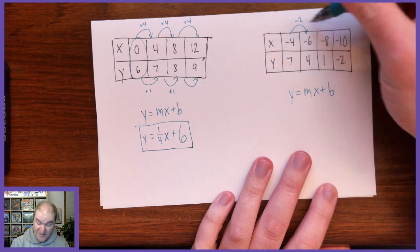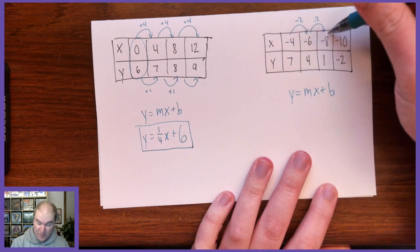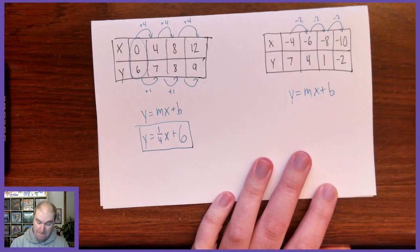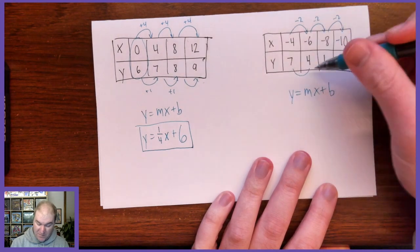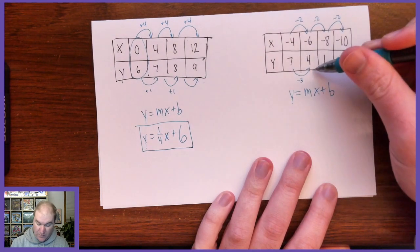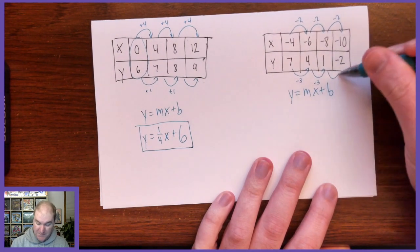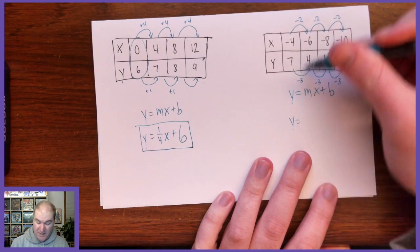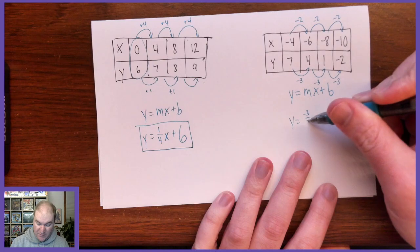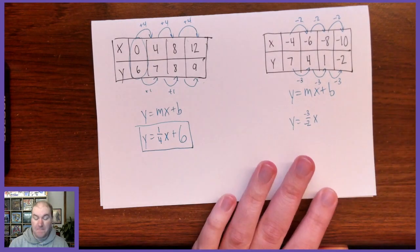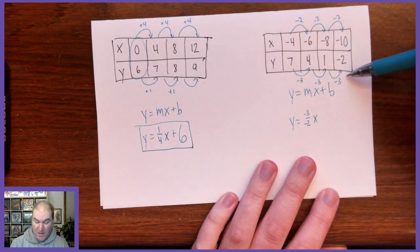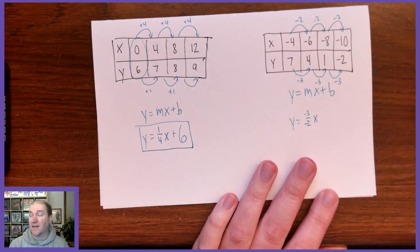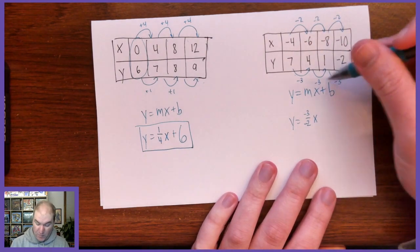So let's find some patterns here. This is going down by 2 every column. This is going down by 3 every column. So we know that means the slope is going to be negative 3 divided by negative 2, because it's how much the y's changed divided by how much the x's changed.